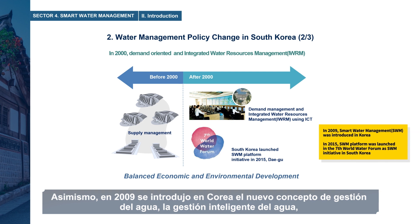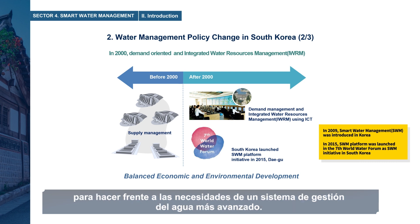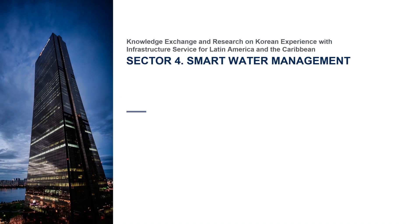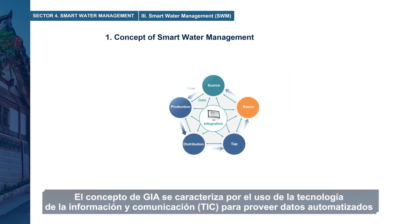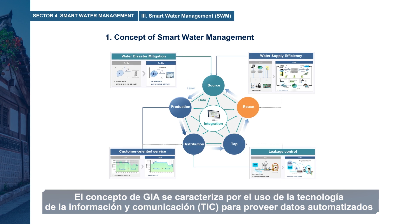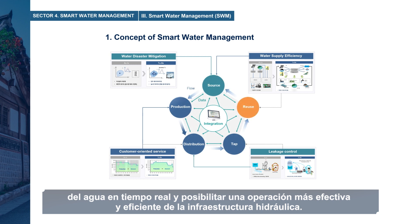Moreover, in 2009, the new concept of water management — smart water management — was introduced in Korea to cope with the needs of a more advanced water management system. The concept of SWM is characterized by the use of Information and Communication Technology, ICT, to provide automated water data in real-time and allow for more effective, efficient operation of water infrastructures.